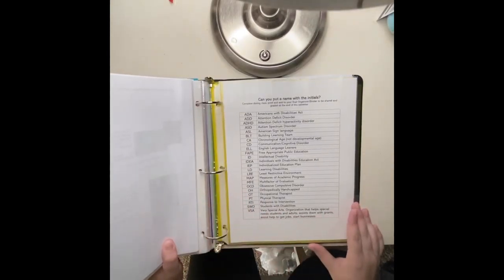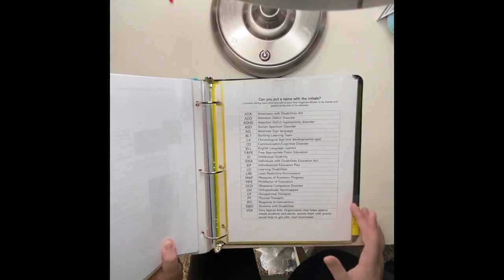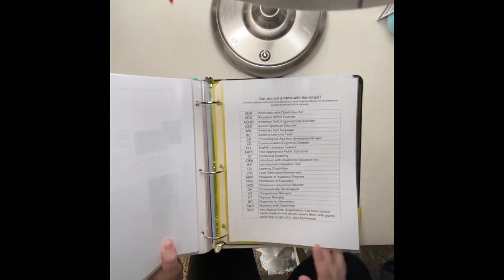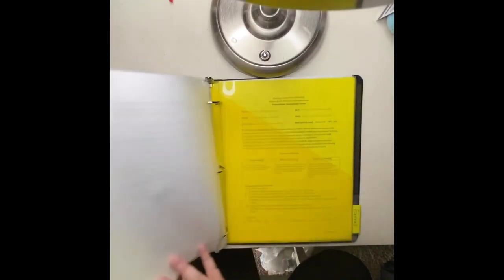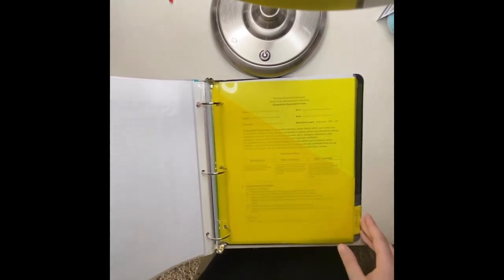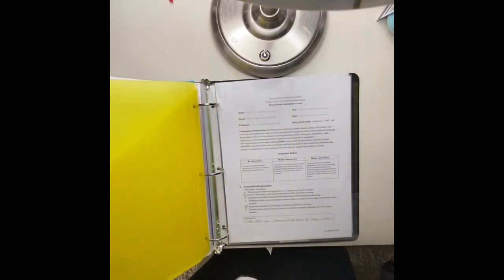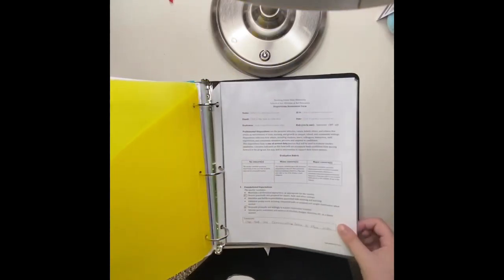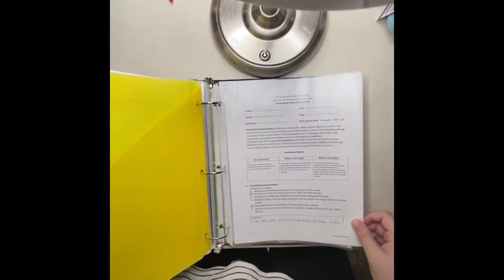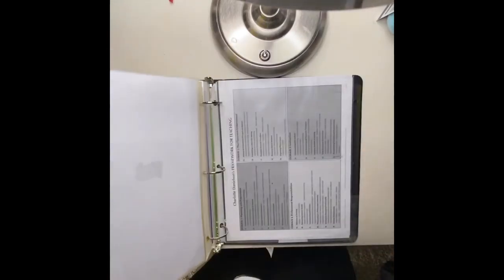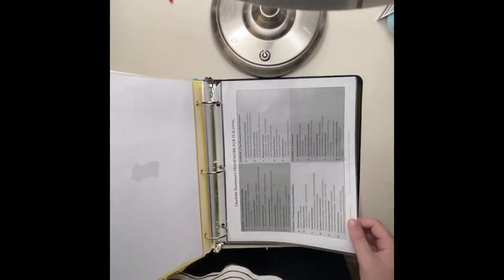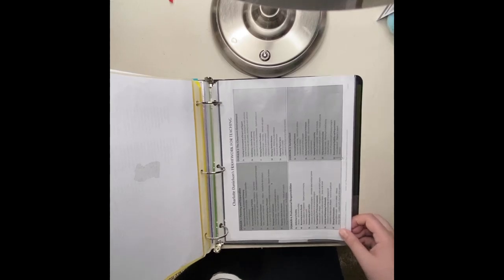Here's the stages of artistic development. Here's the names. And then I did add some extras that I included from last semester when I took the first art ed class from Barb. Here's the dispositions form. Here is Danielson's framework for teaching.